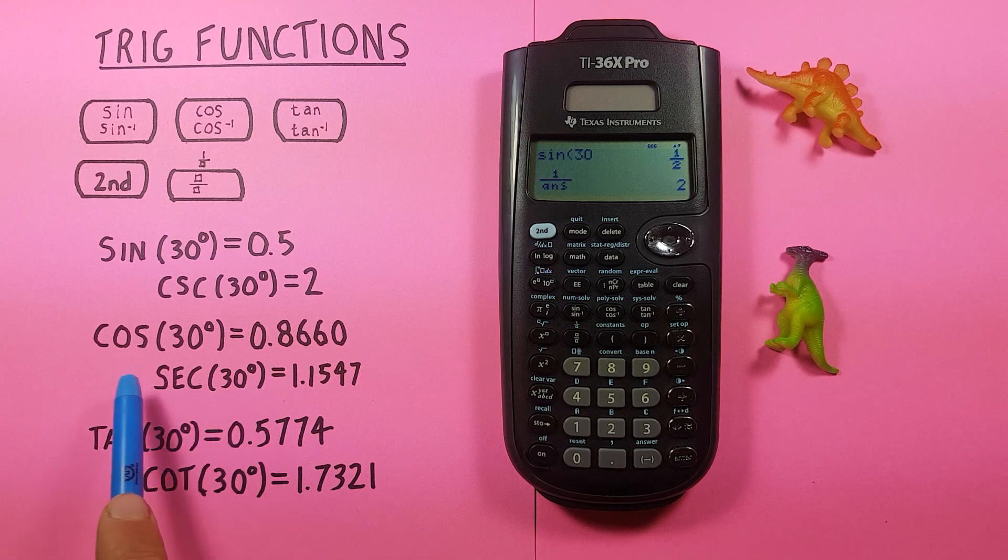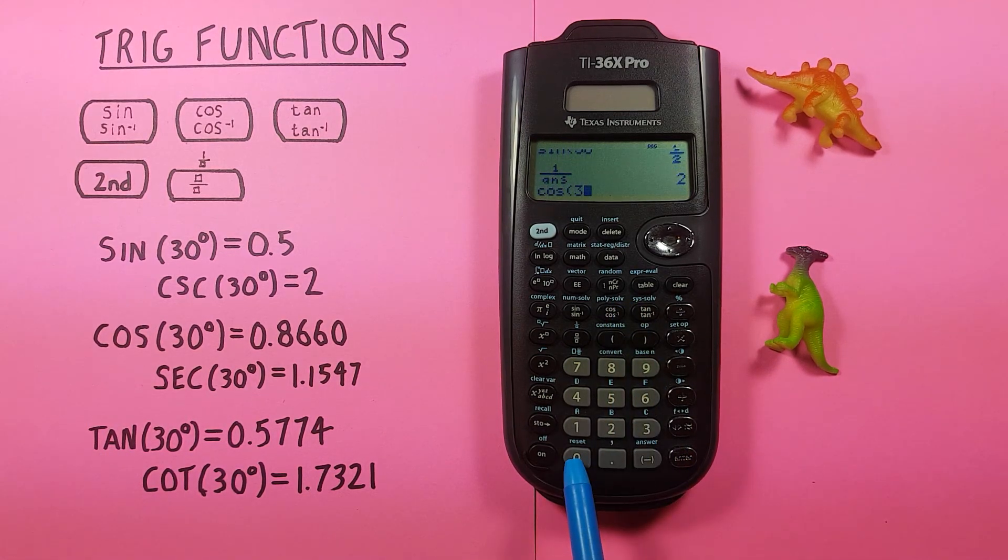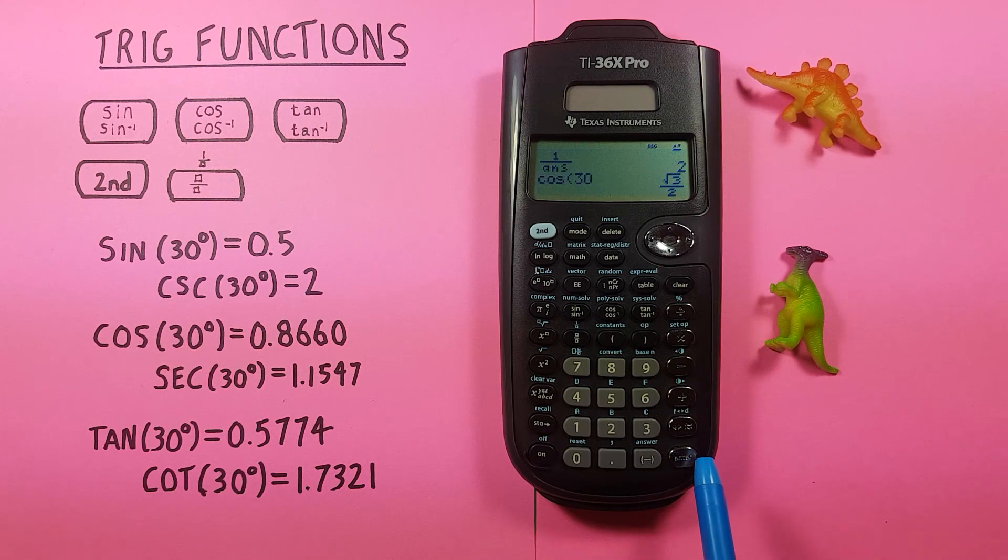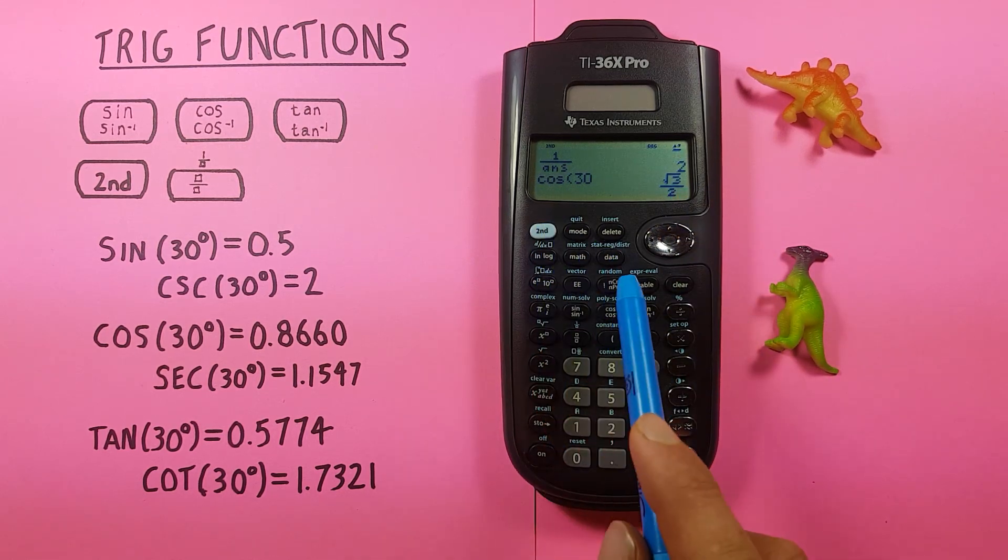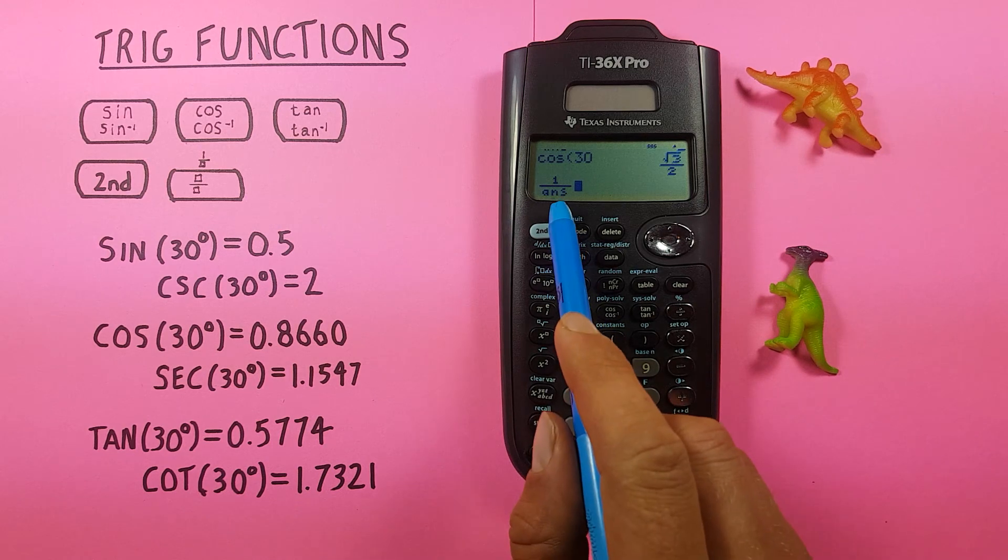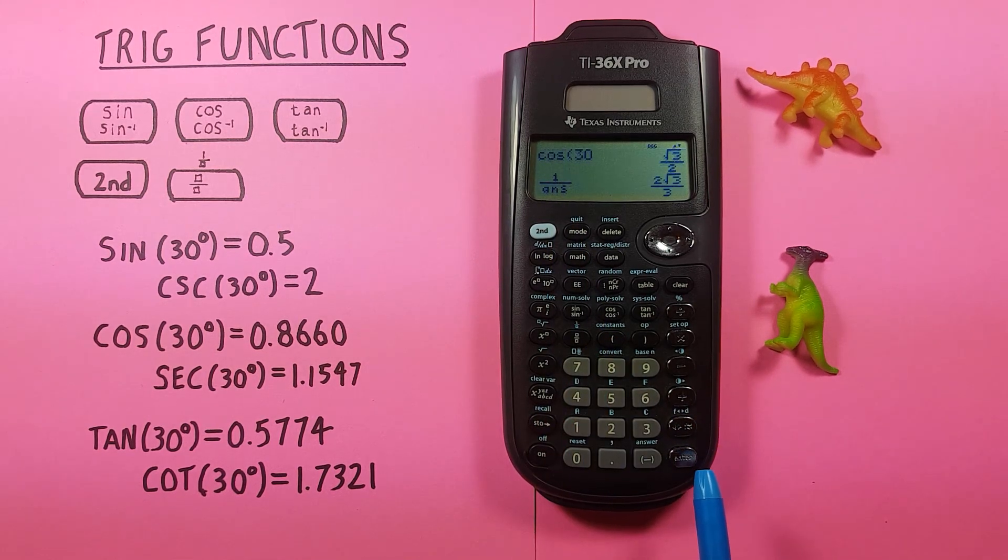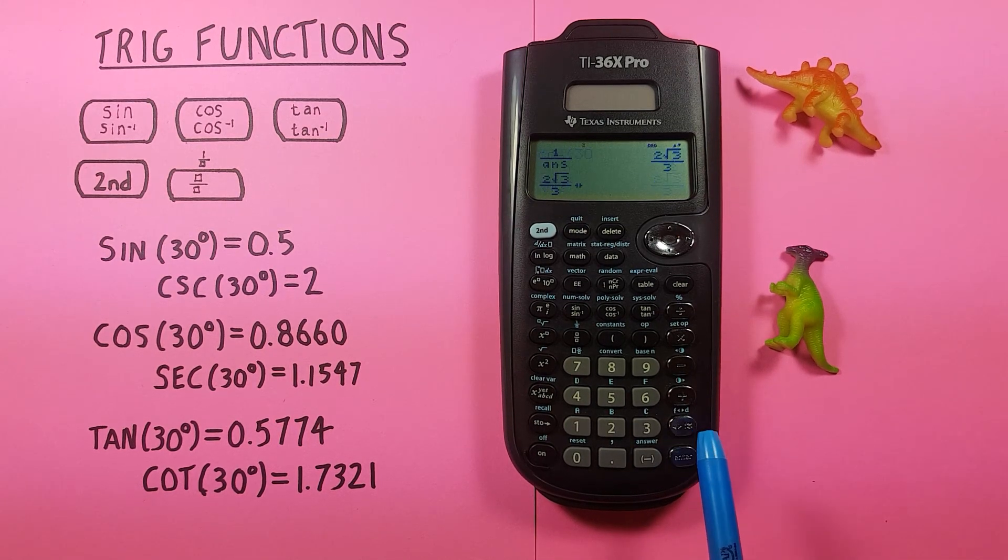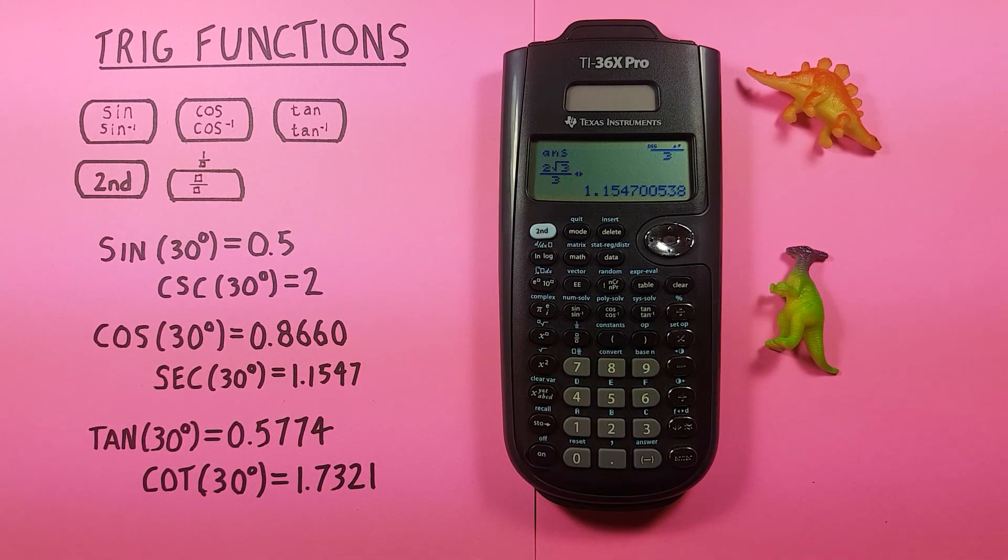And for secant we use cosine. So again, cosine 30, enter, and then we want to inverse that. That's our second function, inverse 1 over answer, enter, and we get our fraction, which again we can convert to a decimal with that left right arrow key. And we get the secant of 30 degrees is equal to 1.1547.